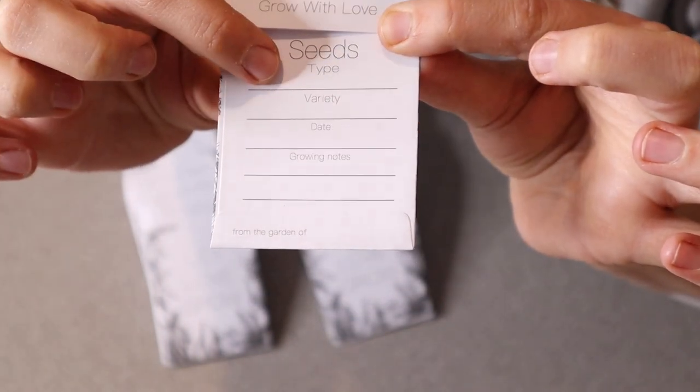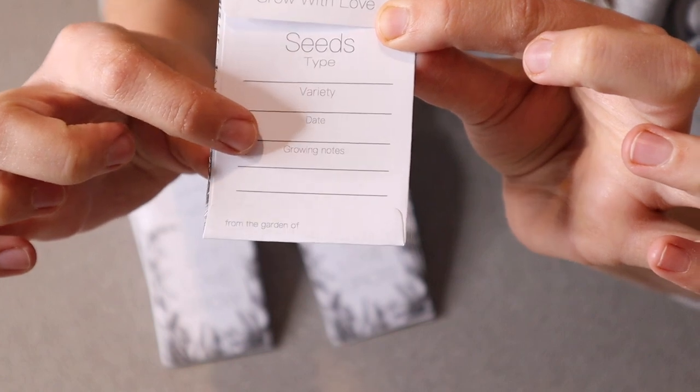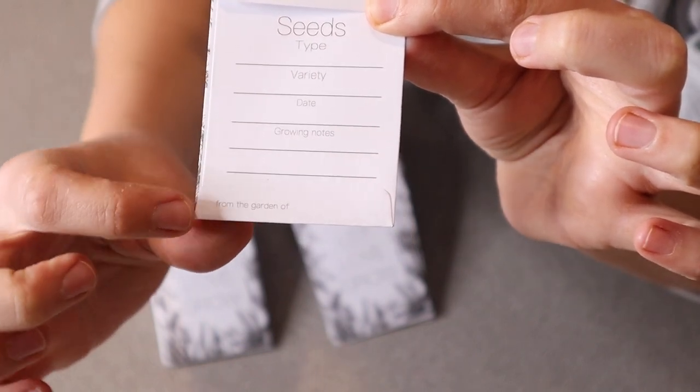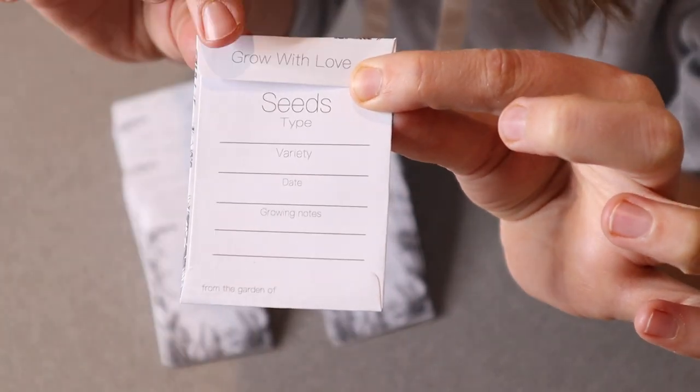And then you can fill in the type of seed, the variety, the date, and any growing notes that you might have. And on the very bottom it says from the garden of blank, so you can fill that out yourself.